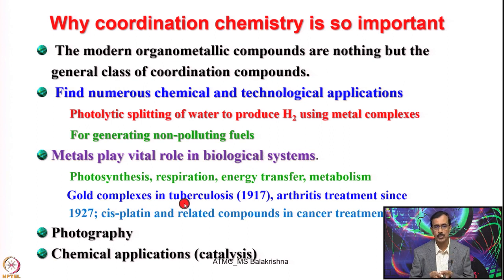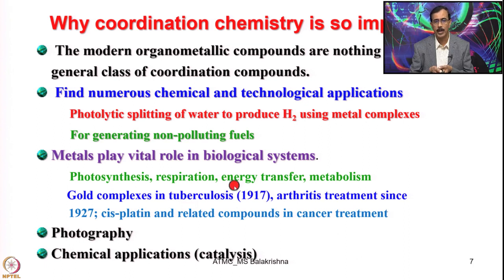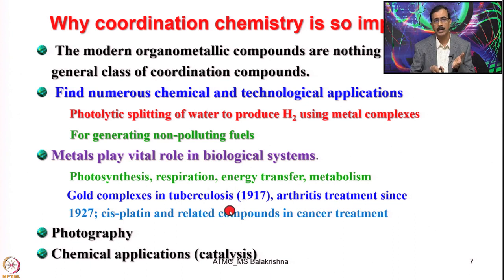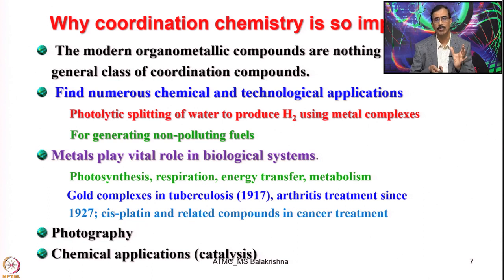Gold complexes were used for tuberculosis treatment as early as 1917, and also for arthritis treatment. From 1927 onwards, cisplatin and related compounds are used in cancer treatment and chemotherapy. Even now cisplatin is used for prostate cancer, and several platinum derivatives are used in various cancers. And of course, photography — when analog photography was used, the greatest contribution of coordination compounds was in photography.